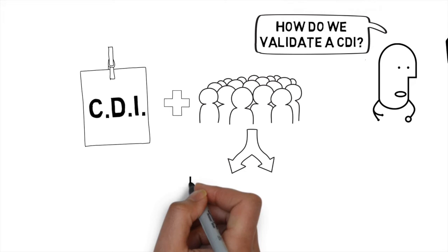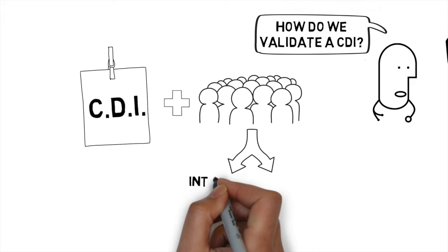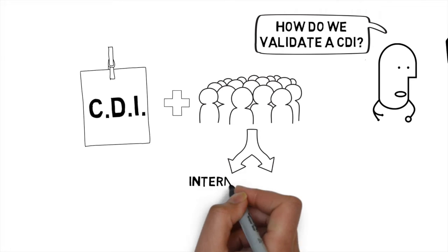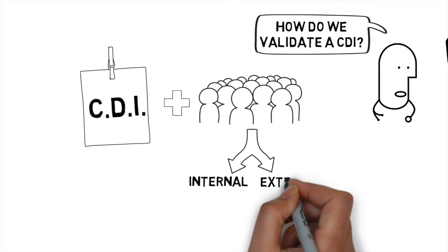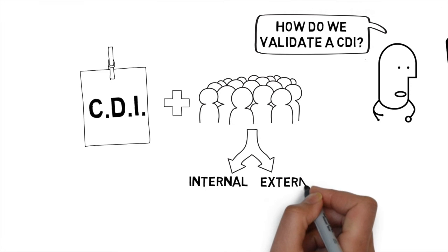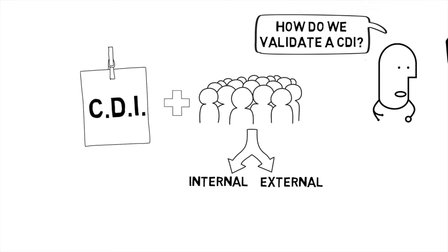You might hear a couple of terms bandied about when people describe validation studies. You may hear of internal or external validation studies. Internal validation studies are usually studies that are done on the same population that was used for the derivation study whereas external validation studies are validation studies that are done on a different population. I generally like external validation studies because I want to make sure that this decision instrument works in different populations.